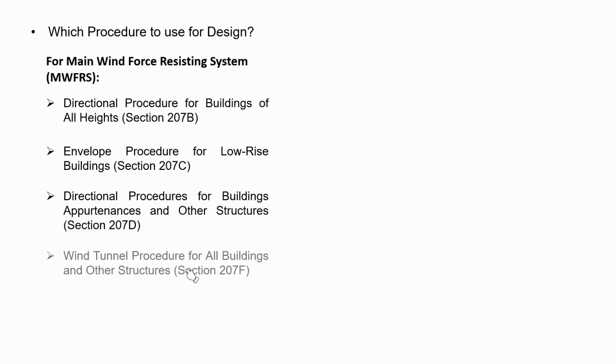Envelope procedure for low-rise buildings, Section 207C. Directional procedures for buildings appurtenances and other structures, Section 207D. And the wind tunnel procedure for all buildings and other structures, under Section 207F.